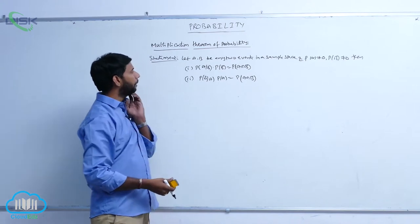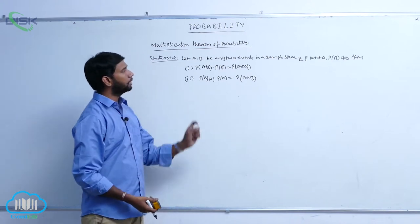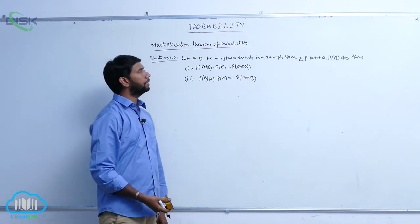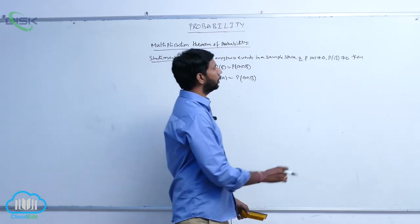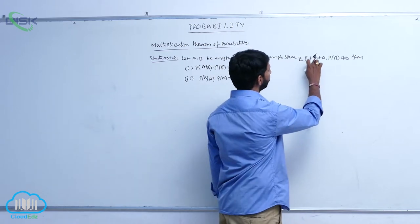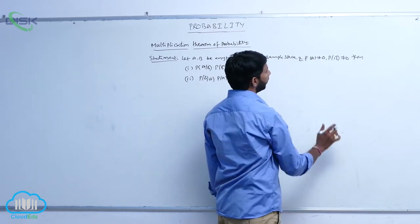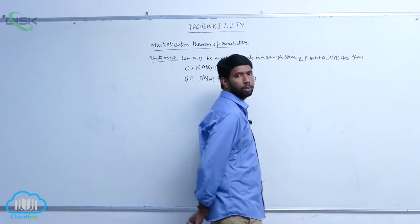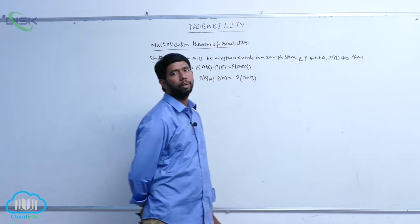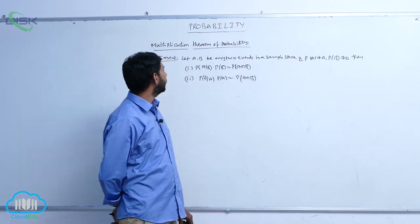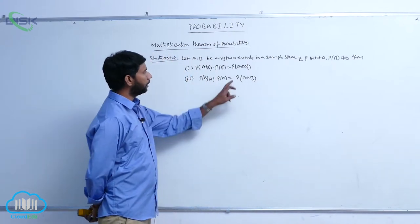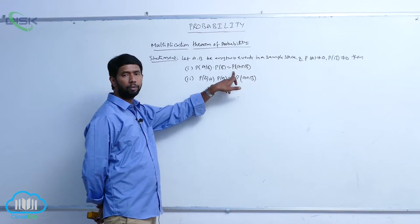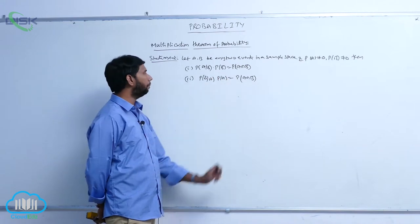If A, B are any 2 events in a sample space and P of A not equal to 0, P of B not equal to 0, then P of A given B into P of B is equal to P of A intersection B.